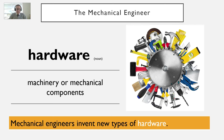Hardware. This is machinery or mechanical components. Sometimes you might have software — things you can't touch, built into a computer or machine — but hardware is the machinery. You can see in the picture the different types of hardware. For example, mechanical engineers invent new types of hardware.